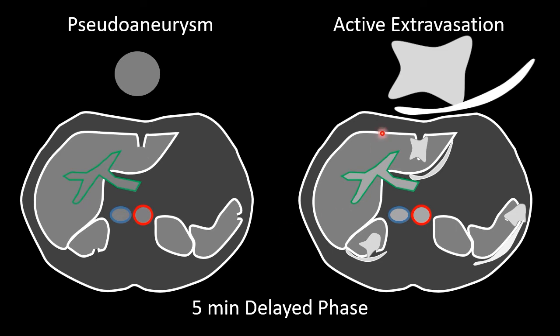Another feature you can see with active extravasation is what I would refer to as pooling. As the bleeding continues and the contrast continues to accumulate in that injury, you can see contrast that starts to pool or spread in dependent spaces adjacent to the organ of injury — often in the perisplenic space, the perinephric space, under the surface of the left hemiliver, or even in Morrison's pouch with injuries of the right hemiliver. You can also sometimes identify this pooling of contrast within the pericolic gutters or the peritoneal space more generally, indicating hemoperitoneum.